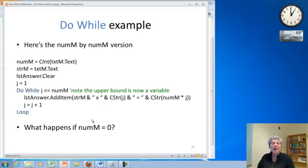Okay, question. What happens if numm equals zero? Because I'm starting with j equals one. So in fact if this number is zero, this will never be true and I'll just skip the whole loop. I won't do anything. So essentially, if you start out with this value with a false condition, the loop will never execute.